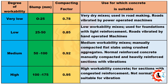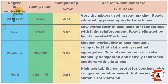Four: high slump, 100–175 mm. Compacting factor = 0.95. High workability concrete, used for sections with congested reinforcement. Not normally suitable for vibration.